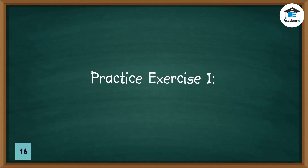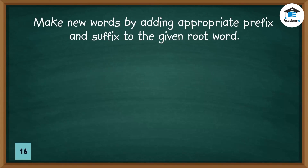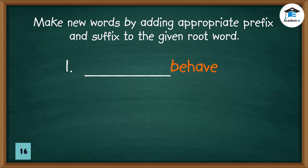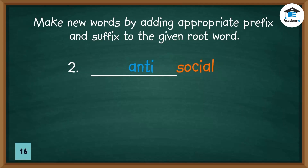Practice exercise one. Make new words by adding the appropriate prefix and suffix to the given root word. One: blank + 'behave' — answer: misbehave. Two: blank + 'social' — answer: antisocial.